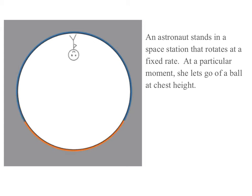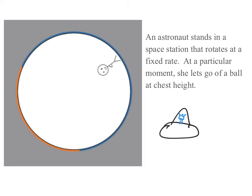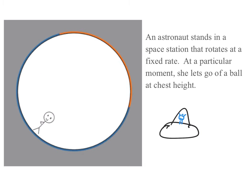What's going on here looks very different to people inside the space station versus people outside who are watching it. If we imagine aliens out here observing her, their reference frame is inertial, while her reference frame is non-inertial because it's rotating — it has an acceleration. So what they see is she lets go of the ball and it just goes on in a line at a constant rate.